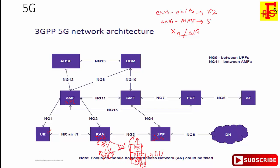So gNodeB is split into two parts: Central Unit and Distributed Unit, divided based on protocol layer options. One criteria is that the Central Unit is above the PDCP layer, and the Distributed Unit covers RLC, MAC, and PHY. The Central Unit is a logical node that includes gNodeB functions such as transfer of user data, mobility control, radio access network sharing, and session management.